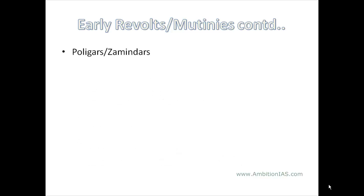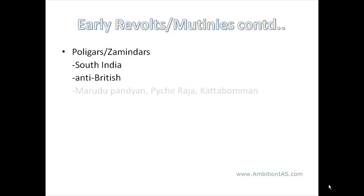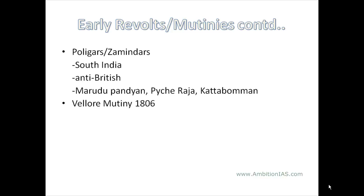The Polygar or Zamindari movement took place in South India and was basically an anti-British movement. Its leaders were Marudu Pandyan, Paichi Raja, and Katha Bhumman.